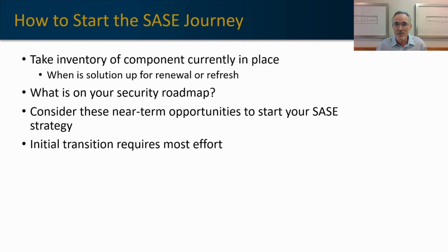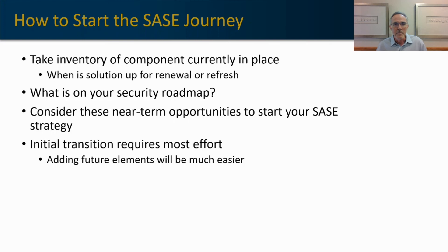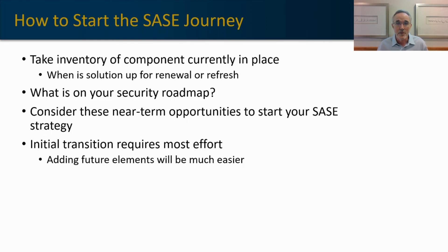The first time you implement a SASE strategy, it's going to require a lot of effort — it's a transition to a new system or platform versus one you might have today, or if you're implementing something greenfield, that's the standard level of effort required to do something new. But the benefit comes in the second, third, and fourth implementation: if you're using the same SASE provider for those different point solutions, implementation will go much easier. The agents are already installed on your network — it's more about turning up capabilities rather than installing new capabilities.